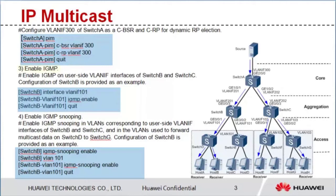Step 3: enable IGMP on user-side VLAN-IF interfaces for switches B and C. Step 4: enable IGMP snooping in VLANs corresponding to user-side VLAN-IF interfaces for switches B and C, and in the VLANs used to forward multicast data on switches D to G.